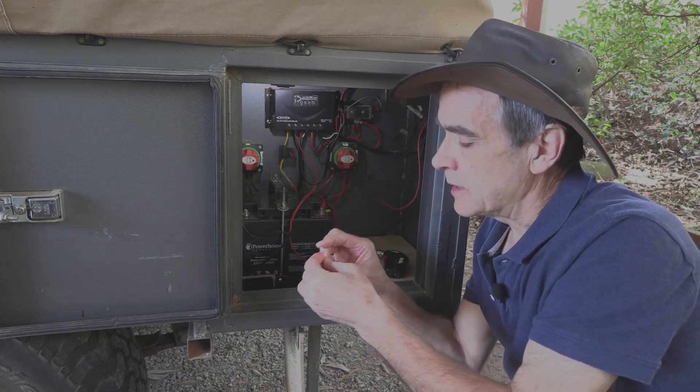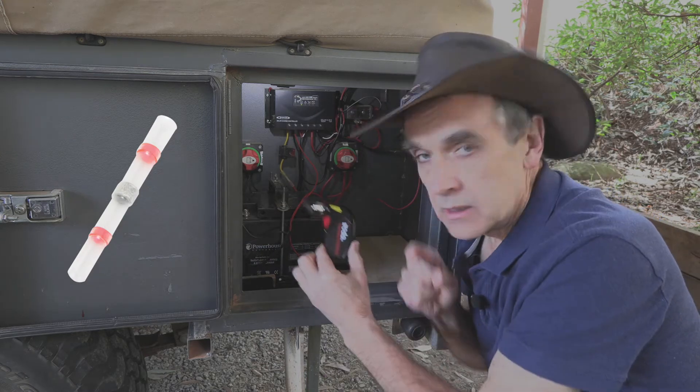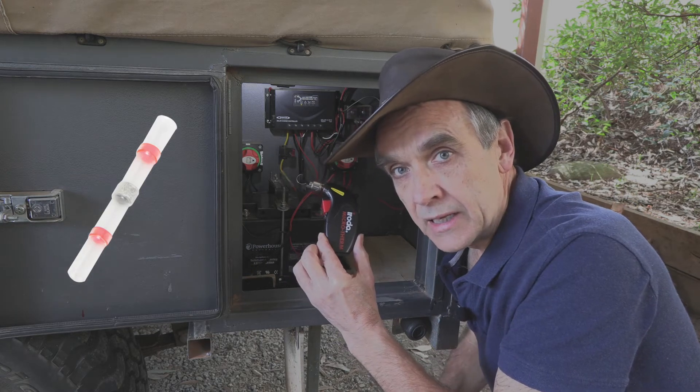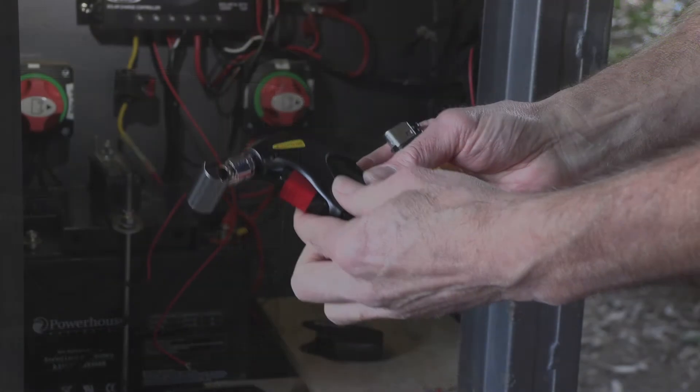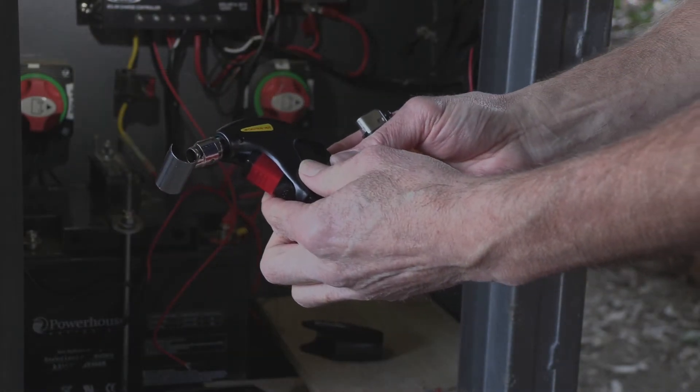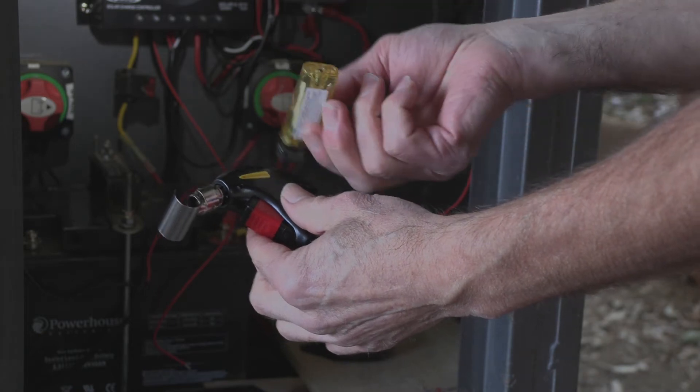...is my solder sleeve heat shrink tubing and the fabulous Iroda flameless heat gun. Let's check it out. This is the Iroda flameless heat gun. It does come with a refillable canister, so once you run out of gas you can quite easily fill it up.